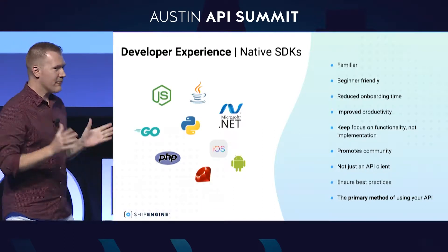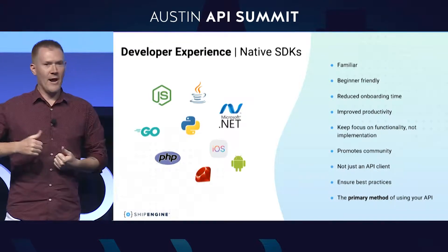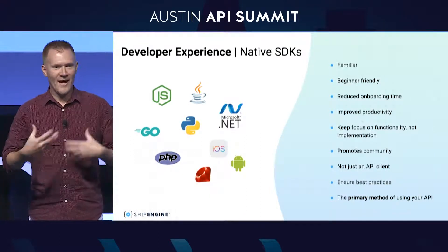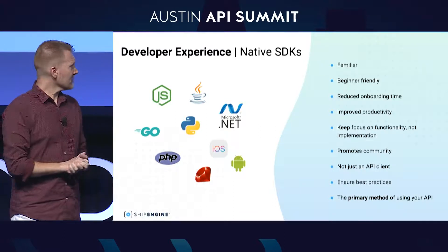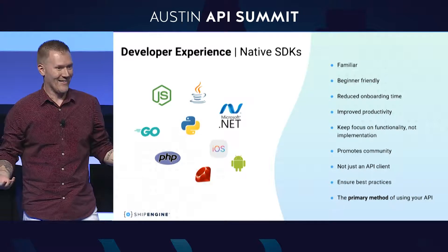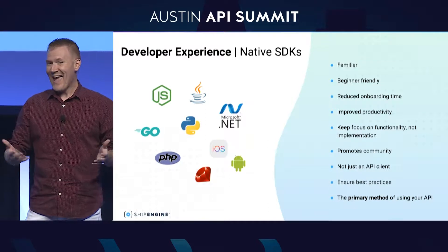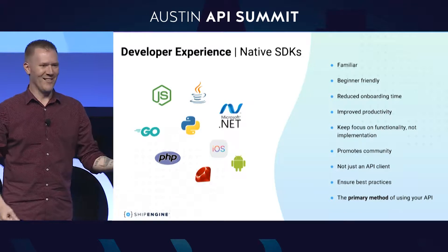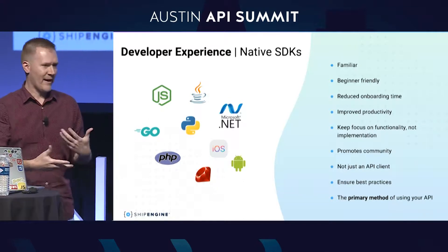SDKs. Every REST API needs a native SDK. The only question is whether you're going to build it or make your customers build it. If you're a Python developer calling a REST API, you're going to create Python wrappers so you can write nice, friendly, native Python code to call that API — same thing for .NET or Go or any other language. The problem is if you have hundreds or thousands of customers, many of them are using Python and each is reinventing the wheel, creating a new Python SDK with varying levels of quality — one might forget error handling, another might forget retry logic. So you're better off providing the SDKs to your customers so you can handle all that and make their job easier.